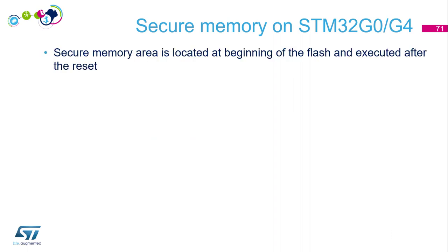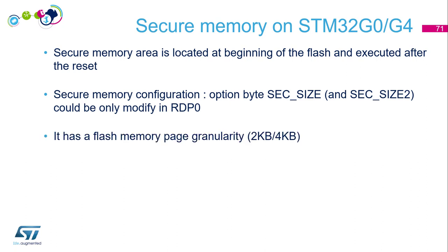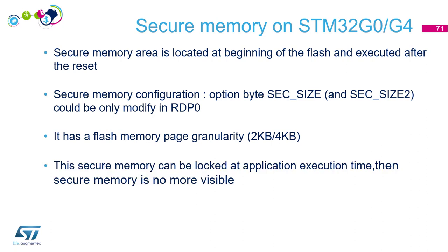On the G0 and G4 family, the secure memory is an area located at the beginning of the flash and executed after reset. The configuration is done via one option byte called sec_size — there is a second one if you have a dual bank. It can only be modified at RDP level 0. So if you combine sec_size with RDP level 1 and want to remove the secure memory, you have to do a regression from RDP level 1 to RDP level 0, which implies a flash mass erase. The granularity is one flash memory page size.